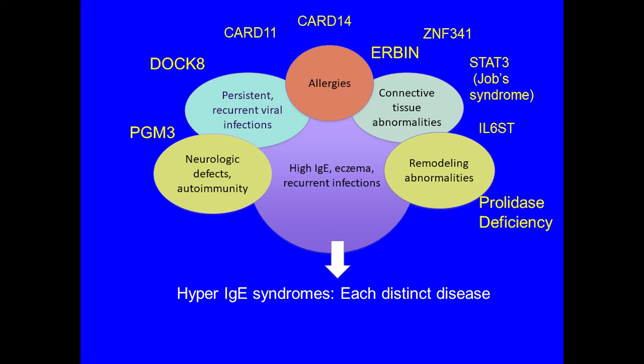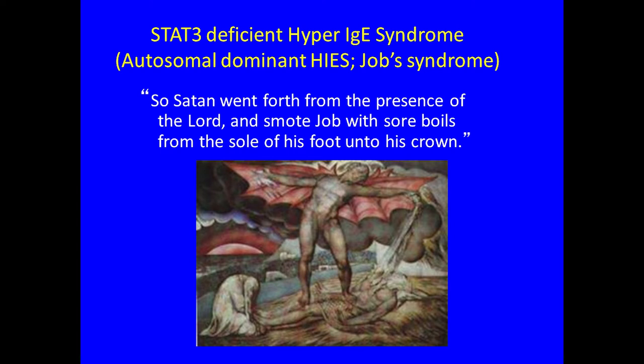I'll briefly mention some of the others. STAT3 hyper-IgE syndrome was named after the biblical figure Job in the 1960s — because of Job being smote with boils. Several years later, IgE was identified and the name was changed to hyper-IgE recurrent infection syndrome. Depending on where you learned about the disease, the local teams or families may call it different things, but this was the original historical name.